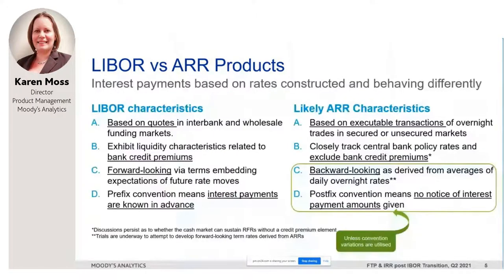When it comes to the characteristics of ARR-linked products — primarily loan products — we still have a number of unknowns because this area is still evolving, but patterns are emerging. The primary reason the switch to alternative reference rates is in progress is because these reference rates are based on tangible transactions rather than the quote system that gave LIBOR such a bad reputation. These trades are in the overnight markets and can be secured or unsecured. For example, SOFR is the rate for overnight loans secured by US Treasuries.